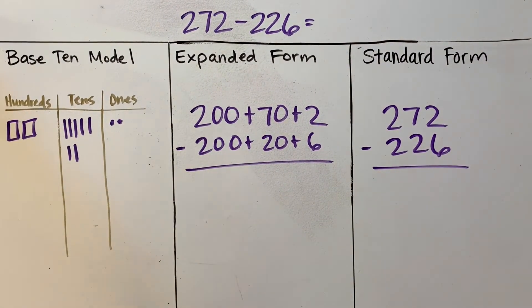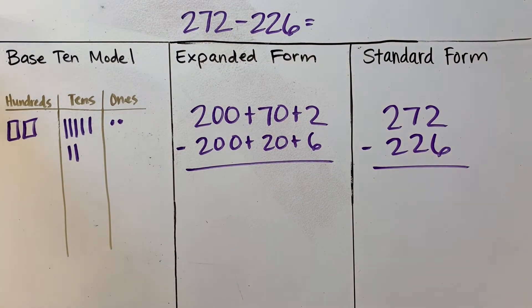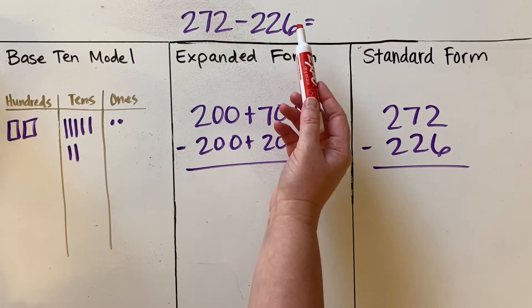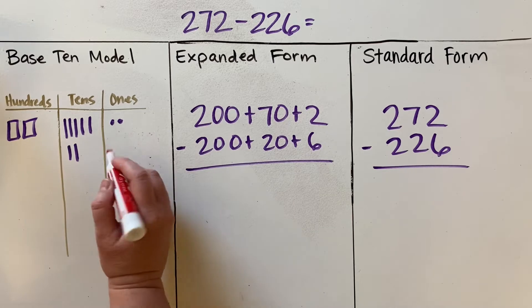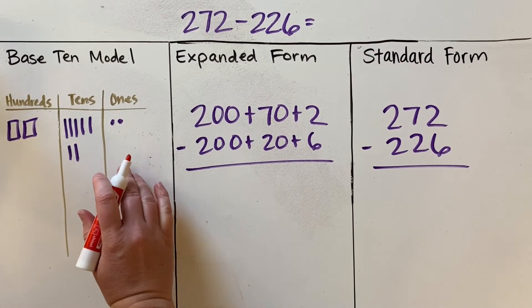Okay, so there are three ways that we are going to show it. For the base 10 model, we're going to start off with subtracting our number 226. We look in the ones place—I'm going to be subtracting six. I look over here and I see, oh, I need to subtract six ones but I only see two ones.